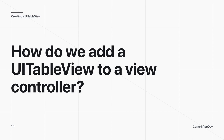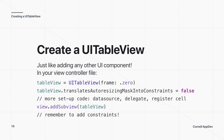To add a UITableView to a view controller, you create it just like any other UI component. Store it in a variable — here called tableView — and use the UITableView constructor. You can use an empty constructor if you're adding constraints. Always set translatesAutoresizingMaskIntoConstraints to false, add it to your subview, and then add constraints.